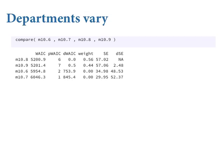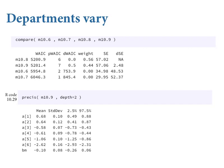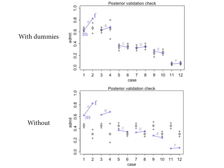I would interpret this as gender probably matters, but it was overfit in the model that has gender in it — the best estimate is probably somewhere between what we see in that model and zero. In model 10.9, which has both department intercepts and the male coefficient, the marginal posterior for BM is negative and reliably so. Most departments have pretty flat lines; the effect is mainly driven by the few departments that get very few female applicants but accept more than half of them.